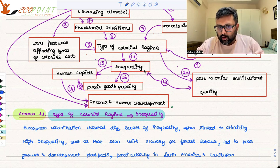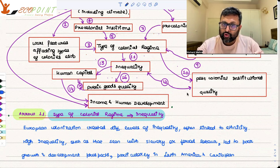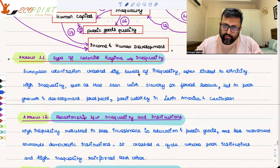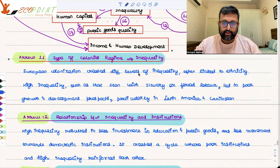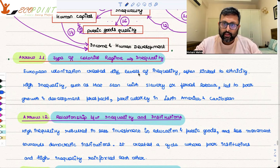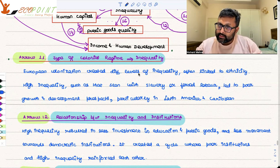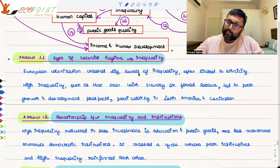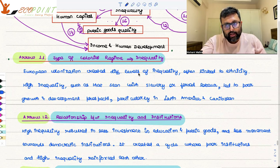The twelfth arrow: how inequality led to poor post-colonial institutional quality, and how post-colonial institutional quality also reinforced inequality. Generally, in areas where inequality is very high, there is less investment in education and public goods, and there are less democratic institutions. These less democratic institutions also reinforce inequality. So inequality reinforced undemocratic institutions, and these post-colonial institutions in turn reinforced inequality.